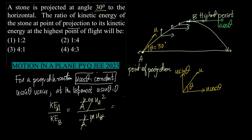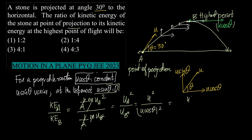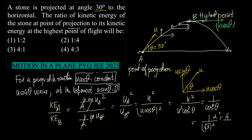Simplifying, the halves and masses cancel, leaving u_A squared over u_B squared. Now u_A is the initial speed u, so u_A squared equals u squared. At point B, since u sin theta equals zero, only u cos theta acts, so u_B squared equals u squared cos squared theta. This gives u squared over u squared cos squared theta, which equals 1 over cos squared 30. Since cos 30 equals root 3 over 2, we get 1 over (root 3 over 2) squared, which equals 4 over 3. Therefore the correct answer is option D: 4 by 3.